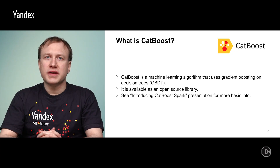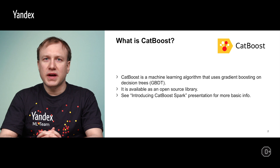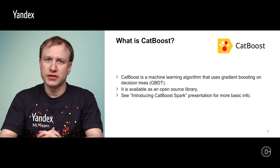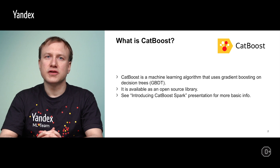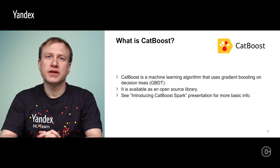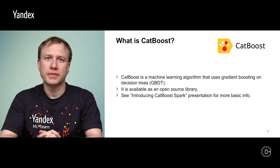A brief reminder about what CatBoost is. CatBoost is a machine learning algorithm that uses gradient boosting on decision trees, or GBDT. It is available as an open-source library with a permissive Apache 2 license, so it is both free as in freedom and free as in beer. See the Introducing CatBoost Spark presentation for more basic info.